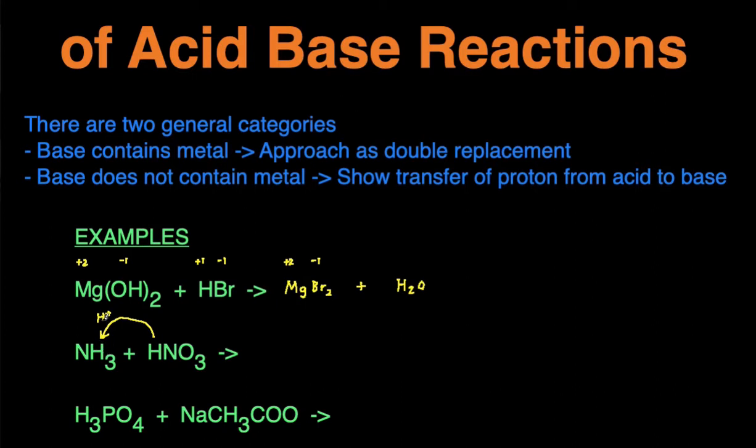When NH3 picks up an H+, it becomes NH4+ and will have a positive charge because it was originally neutral and picked up a positive charge. And then when HNO3 loses an H+, you get NO3- and it has a negative charge. It has a negative charge because before it was neutral and it lost a positive charge, so you're left with a negative charge.